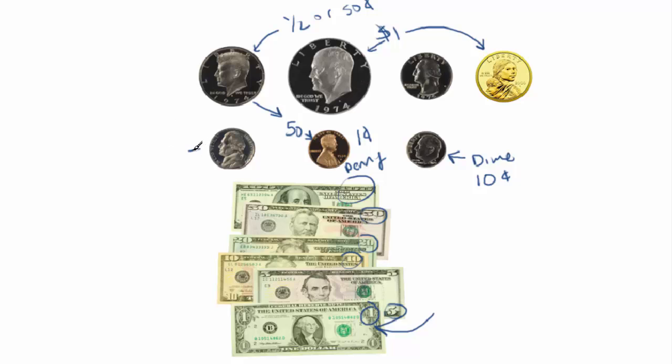Here is a nickel. A nickel is worth 5 pennies, or 5 cents. Or we can get 20 of these together and make a dollar.